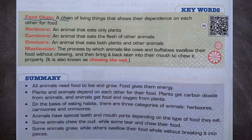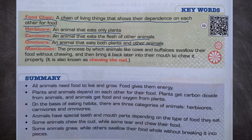Keywords: Food chain — a chain of living things that shows their dependence on each other for food. Herbivore — an animal that eats only plants. Carnivore — an animal that eats the flesh of other animals. Omnivore — an animal that eats both plants and other animals. Mastication — the process by which animals like cows and buffaloes swallow their food without chewing and then bring it back into their mouth to chew it properly. It is also known as chewing the curd.